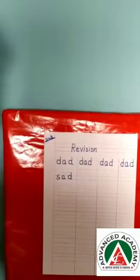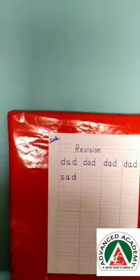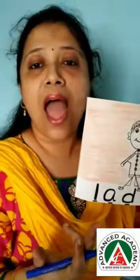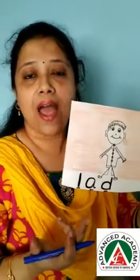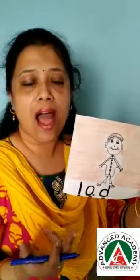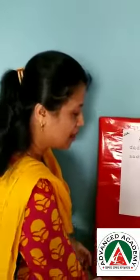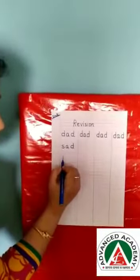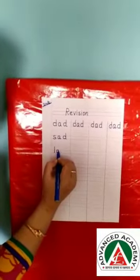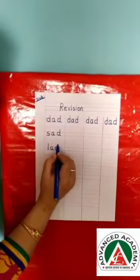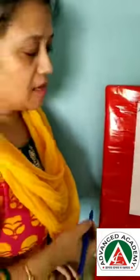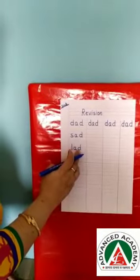The third word is L, A, D — Lad. So we will write Lad: L, A, D — Lad. L, A, D — Lad.